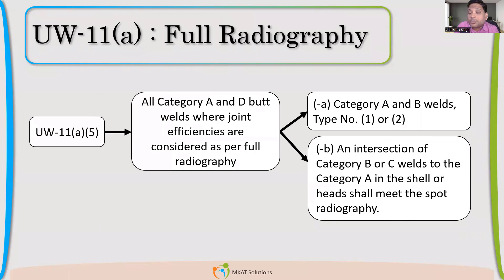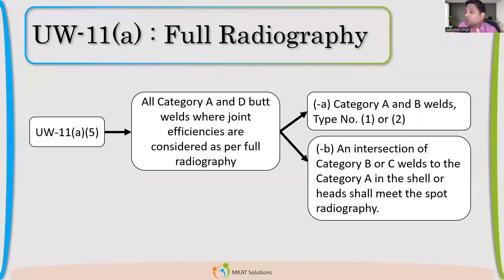Clause UWA5 talks about that for all Category A and D butt welds — Category A is the longitudinal seam, and Category D is nozzle-to-shell connections — if we have taken the joint efficiency as 1, then we have to do full radiography. Because only with full radiography with a Type 1 joint will you get the joint efficiency as 1. If you have taken the full joint efficiency, the maximum for that type, then it has to be fully radiographed.